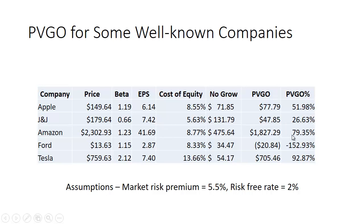For Amazon, almost 80% of their value is made up in this growth opportunity, because the no-growth part is only $475.64 and the company sells for over $2,300. For Ford, you're actually paying more than the no-growth value should be, so you get a negative present value of the growth opportunity. And Tesla, after doing the calculation, shows that almost 93% of its value is made up of this growth opportunity.